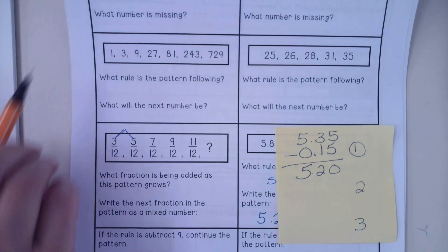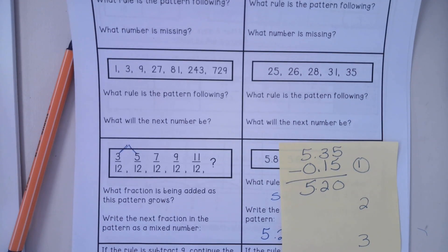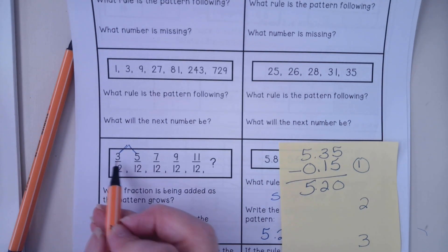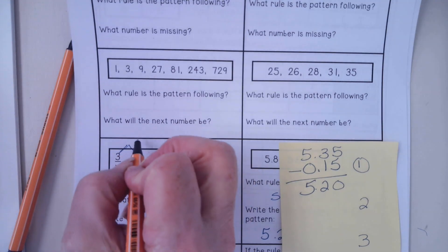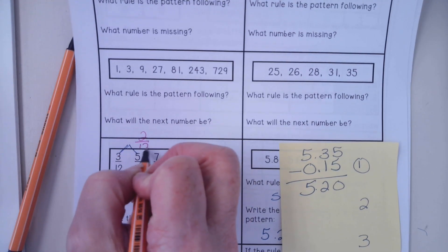Look again and see how does it change from 1 to 2. And on that one it looks like from 3 to 5, 3, 4, 5. So it's changing by 2 12ths.